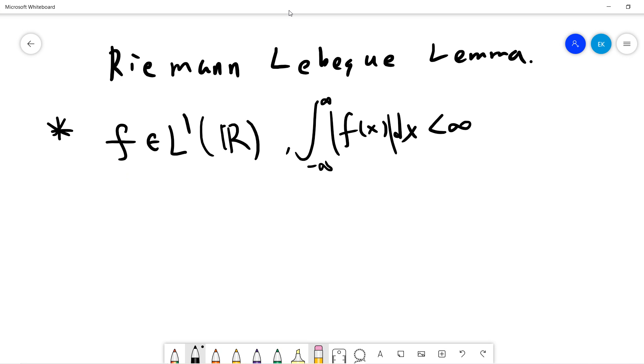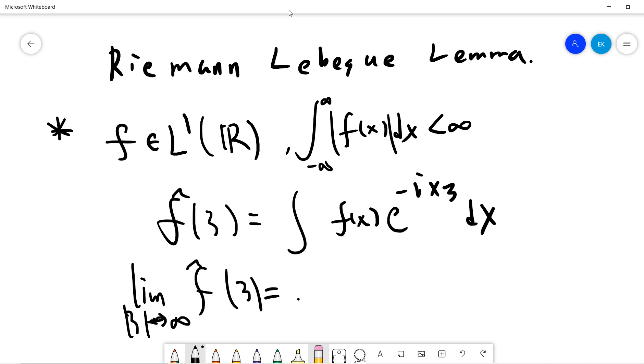Then we can define a so-called Fourier transformation using zeta. So maybe we use another notation called per c. So per c will be just integral of f(x) exponential minus ix per c dx. And the fact is that the Riemann Lebesgue Lemma tells us that the limit as per c goes to infinity, both positive or negative, then this will turn out to be zero.